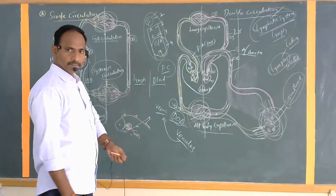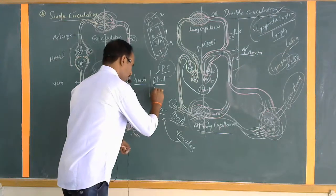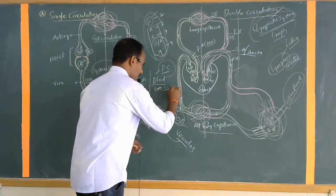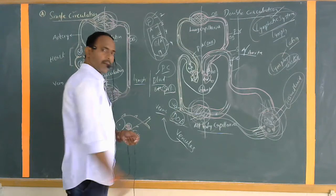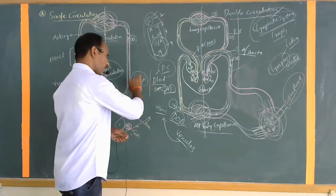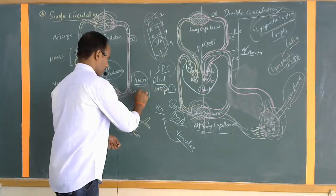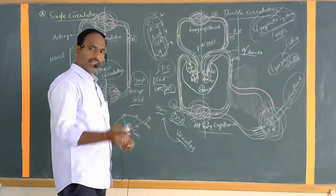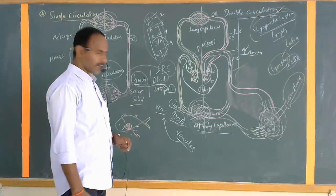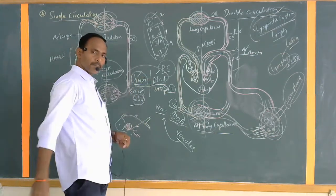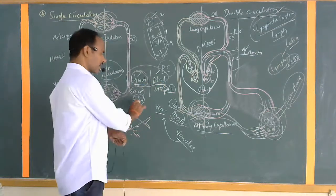Blood is a fluid material containing both solids and liquid materials. Solid material refers to blood cells; liquid material includes plasma and serum. Lymph is a fluid material containing all the nutrients except the solid material — that is, without blood cells. Except for the absence of blood cells, lymph and blood are nearly equal in composition.